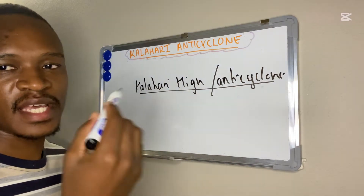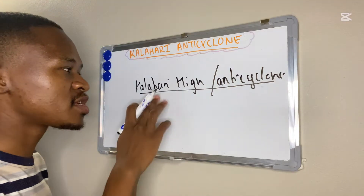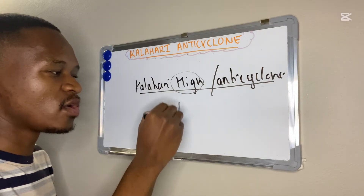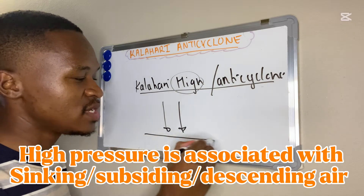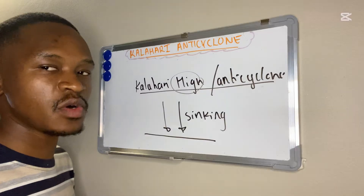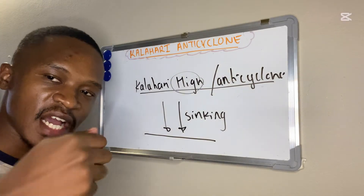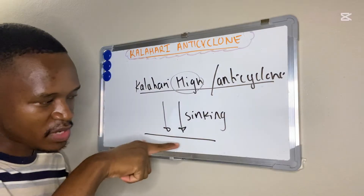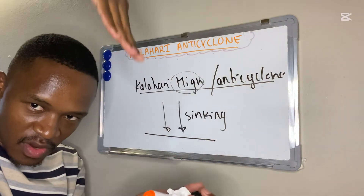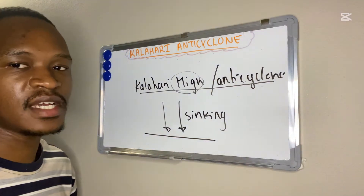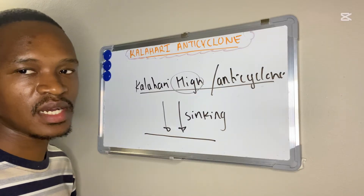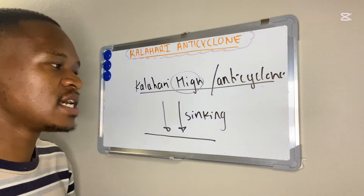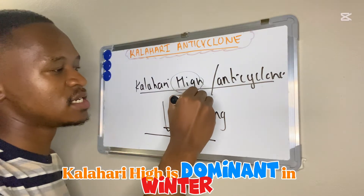The Kalahari High is called an anticyclone because the air circulation is anti-clockwise. What you must know about a high pressure in general is that it is associated with sinking or subsiding air, because pressure refers to force exerted on the surface. It's a high pressure because there's more force or pressure being exerted on the surface — air is sinking, causing more force or pressure on the surface.